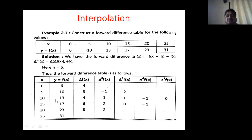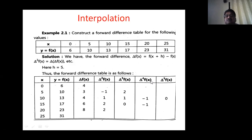With six given values, the first difference column contains five values, delta squared contains four values, the next column three values, then two values, and the last column contains one value. The notation for f(x) is also y, so we write delta raised to five y. The next differences — delta raised to six f(x) and beyond — are all zero.